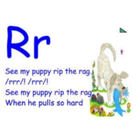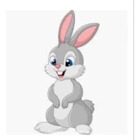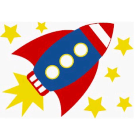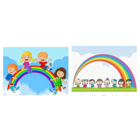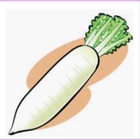Now we are going to learn the objects that start from the letter R. This is rose — R for rose. This is red color; rose is red color. And this is rabbit. And this is rocket — R for rocket. And then this is rainbow. And this is radish — R for radish. Yes, very good children.